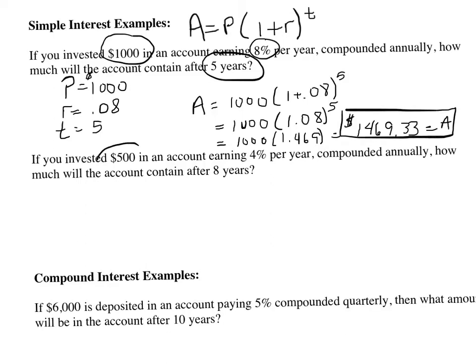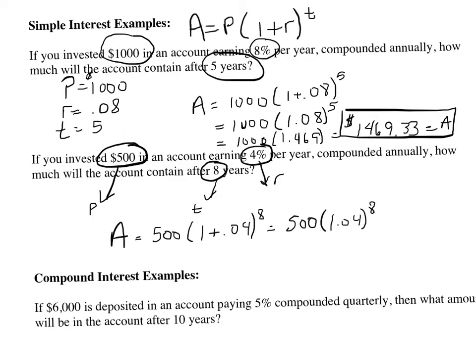Here's another example. If you invested $500 in an account earning 4% per year, how much will the account contain after 8 years? This is our principal, our interest rate, and our time. So our ending amount is going to equal 500 times (1 plus 0.04) to the 8th power. So 500 times 1.04 to the 8th power should give you $684.28.